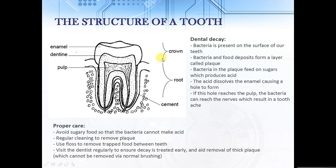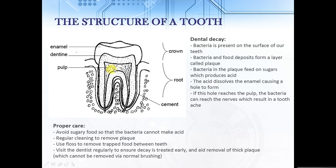You also need to know how dental decay occurs. Bacteria is always present on the surface of our teeth. Bacteria, along with food deposits, form a layer of what we call plaque. Bacteria in the plaque feed on sugars from what we eat, and this process produces acid. The acid dissolves the enamel and this causes a hole to form. If the hole reaches the pulp, which contains nerves, it'll result in an infection and that will cause a toothache because of all the sensory neurons located in that region of the tooth.